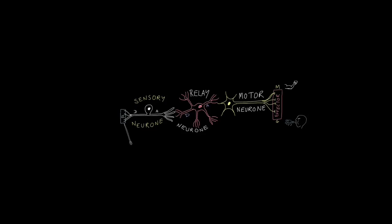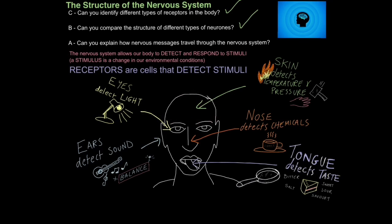Remember, some effectors however aren't muscles — they are glands. So equally, for example, if we've got a scare, this motor neuron could synapse with an adrenal gland, which then secretes adrenaline, which has its own effects — heart rate raises and so on. And that is how you can explain how nervous messages travel through the nervous system.